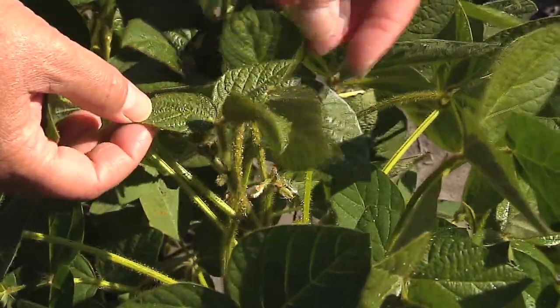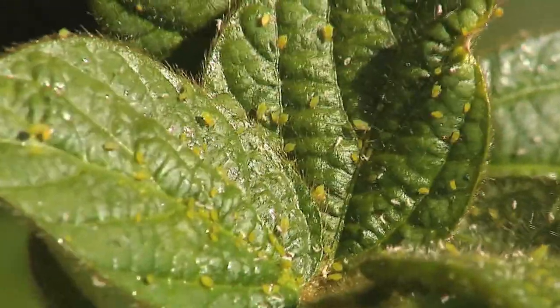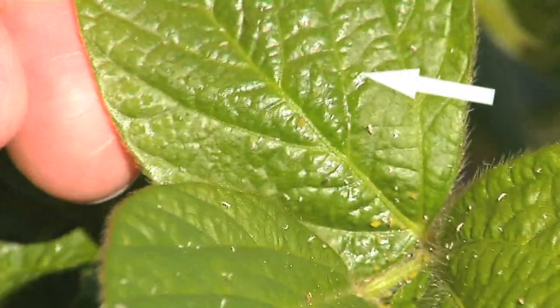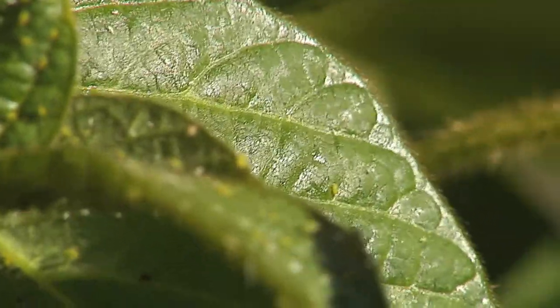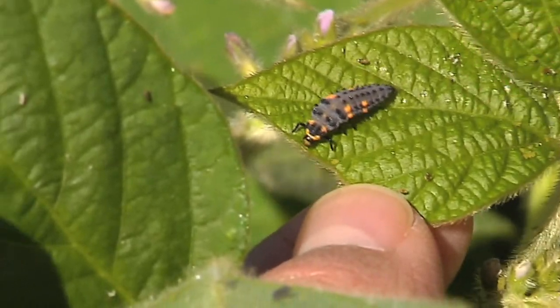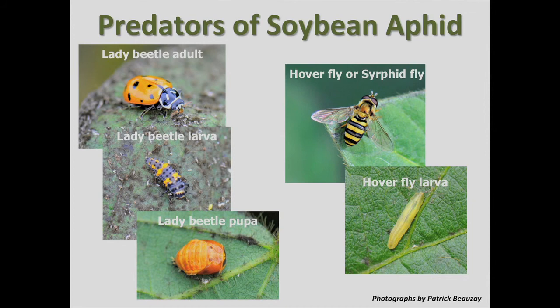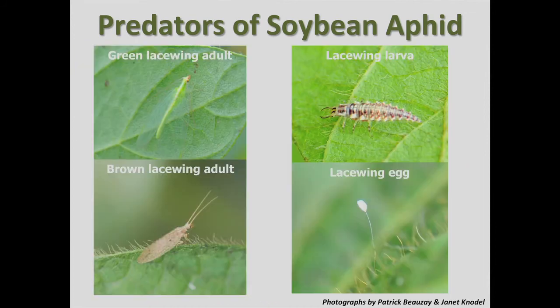Another thing to note in the field is honeydew. You can see the glossy material — that's all honeydew that the aphids excrete. You can look for any predators, such as this lady beetle larvae that feeds on the aphids. Other predators of the soybean aphids besides the lady beetle include larvae of the hover flies or syrphid flies, and larvae of the green and brown lacewings.